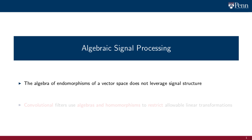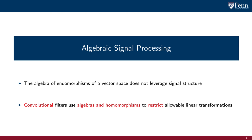In the previous video, we saw that the linear processing of a signal can be expressed as the application of an endomorphism on a vector space. We also highlighted that the space of all endomorphisms of a vector space is an algebra, one, however, that does not allow for the exploitation of signal structure. We know that the introduction of convolutional filters is necessary to leverage structure. In this video, we explain the use of algebras and homomorphisms to restrict the set of allowable linear transformations that can be applied to a signal.